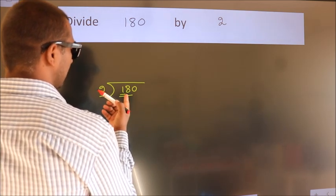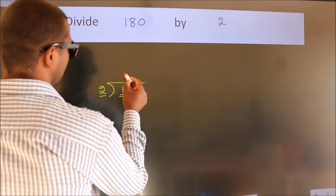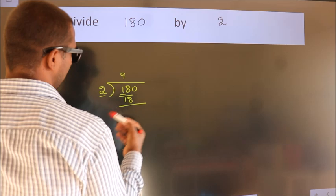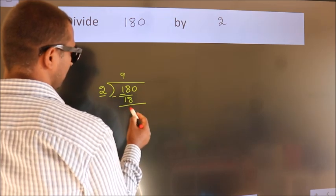When do we get 18? In the 2 table, 2 times 9 is 18. Now we should subtract. We get 0.